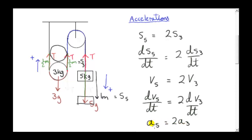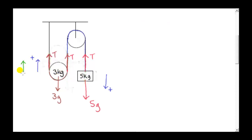The accelerations are actually constant because we have constant forces acting on the two particles. I'll call the acceleration of the three kilogram mass A. So if the acceleration of the three kilogram mass is A upward, we know that the acceleration of the five kilogram mass is 2A downward.